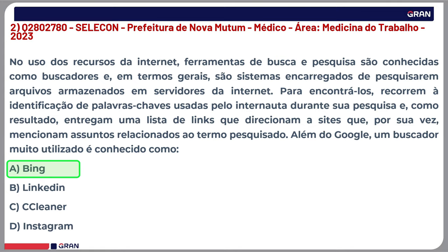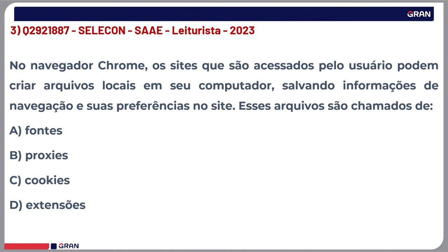Vamos para a próxima questão. No navegador Google Chrome, os sites que são acessados pelo usuário podem criar arquivos locais no computador, salvando informações de navegação e preferências no site. Esses arquivos são chamados de: A) Fontes, B) Proxys, C) Cookies, D) Extensões. Vou deixar um minutinho — essa está bem fácil.